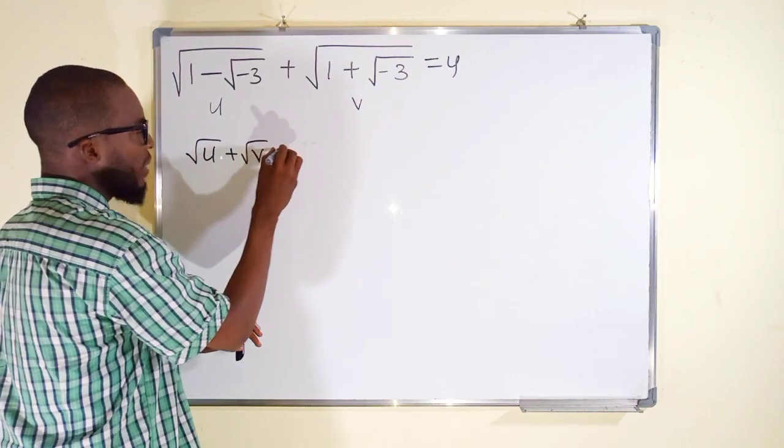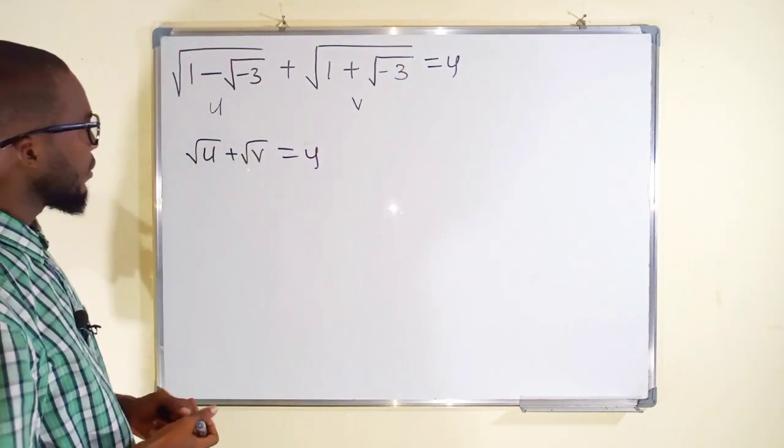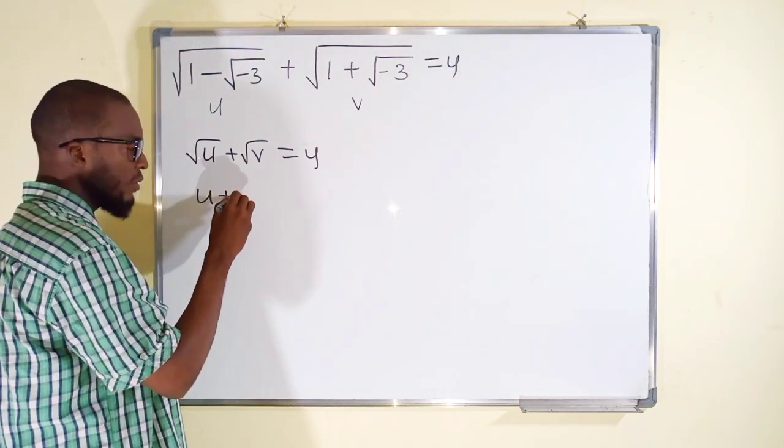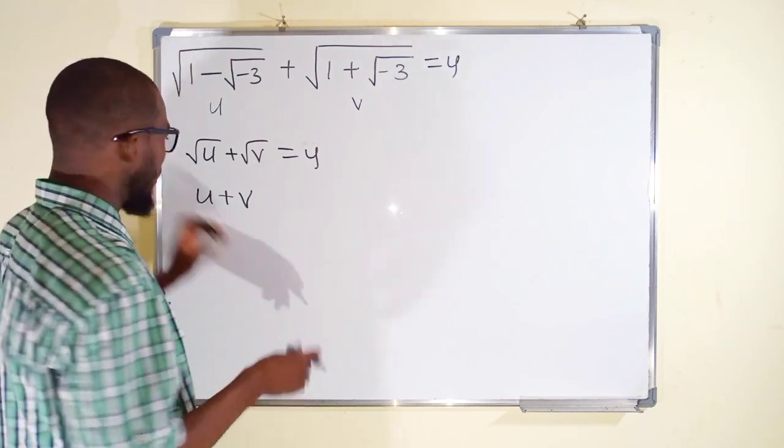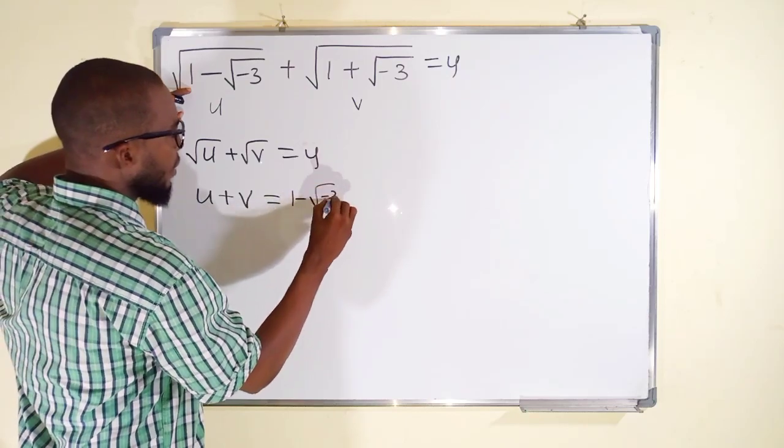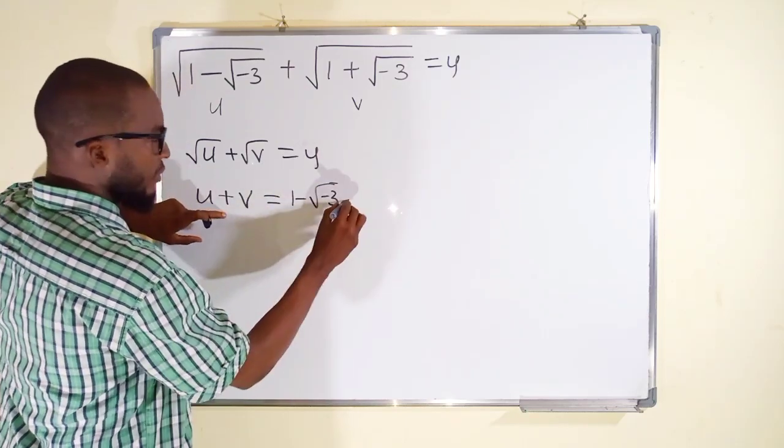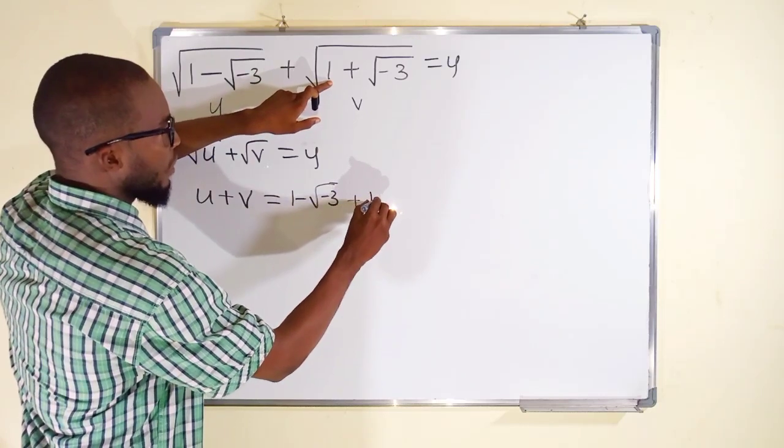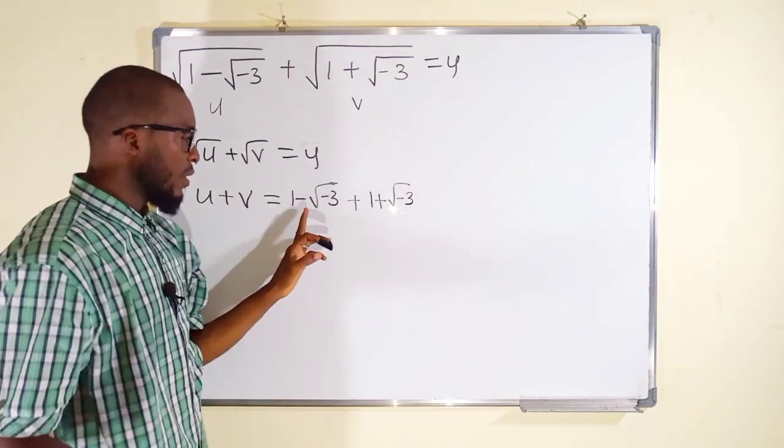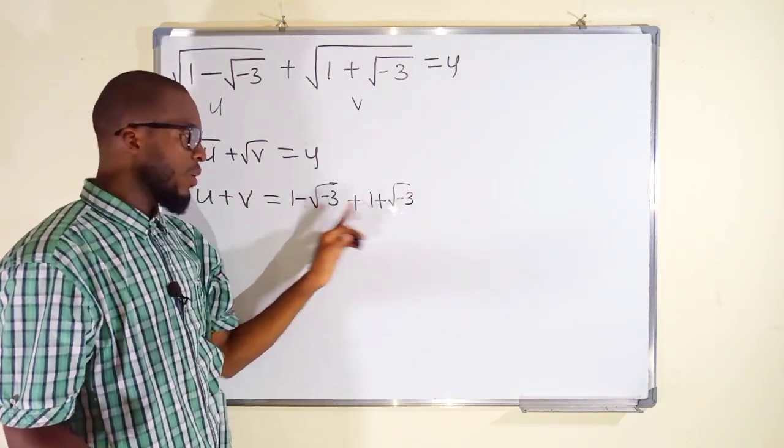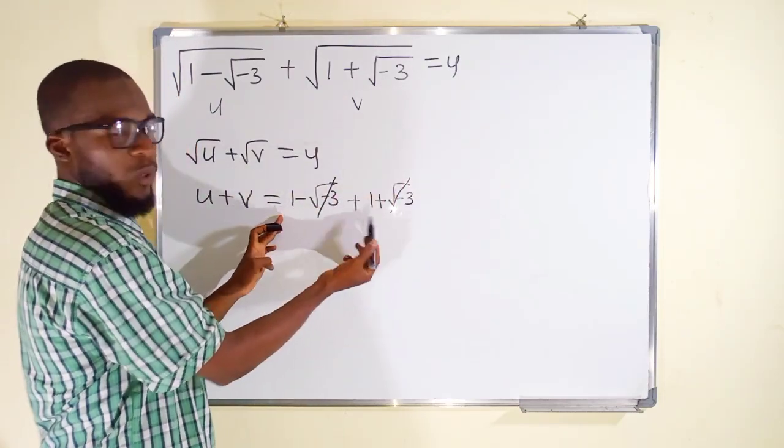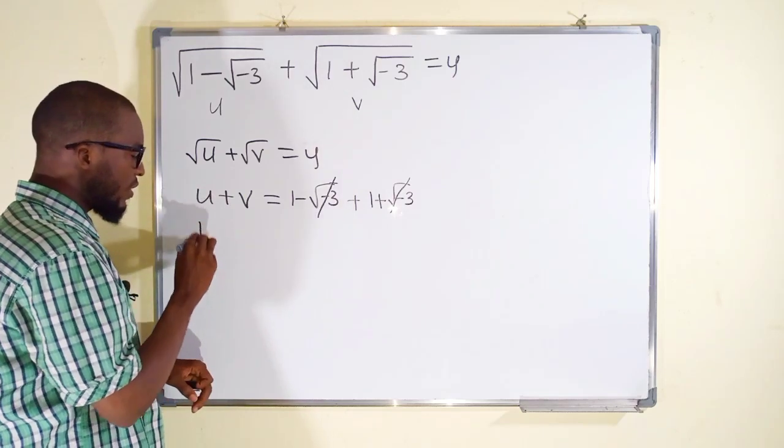Before we continue, I want us to find u + v and u × v. Let us start with u + v. You know u is going to be 1 minus √(-3), plus v is 1 plus √(-3). You can see this √(-3) here is negative while this one is positive, so they will cancel out automatically. What we have left is just 1 + 1 which is equal to 2. This means that u + v is equal to 2.